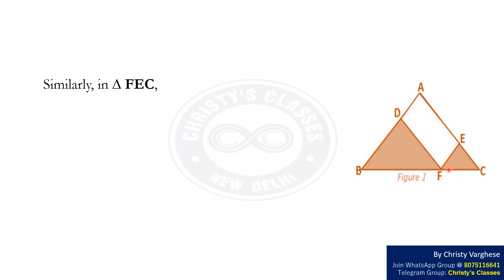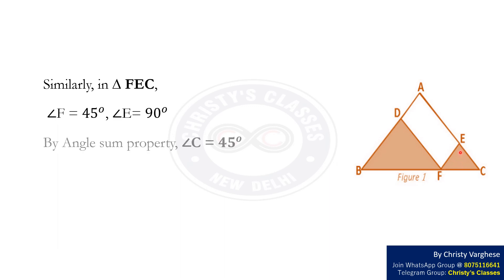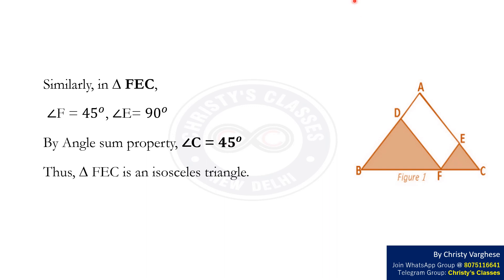Similarly, in triangle FEC, angle F equals 45 degrees and angle E equals 90 degrees. By the angle sum property, angle C equals 45 degrees. Thus, triangle FEC is an isosceles triangle, giving us EC equals EF.